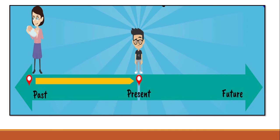Past simple — action happened in the past. Look at the picture. Before you were a young boy, you wore what? A baby. So, past is something that happened in the past. Not in the present. Not in the future. Past.